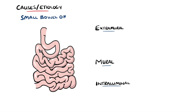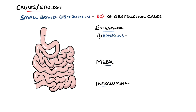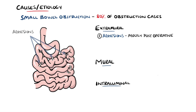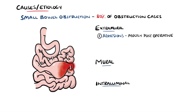Small bowel obstruction is more common than large bowel obstruction, with around 80% being small bowel. The most common cause for small bowel obstruction is post-surgical adhesions — bands of scar tissue that form as a result of surgery and can cause affected tissue to stick together, making the intestines kink or twist, leading to an obstruction. Around 66% of people will have post-op adhesions, with 10-25% of these patients going on to develop an obstruction.